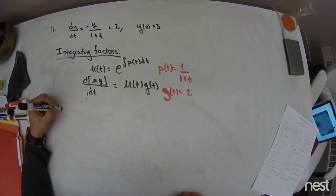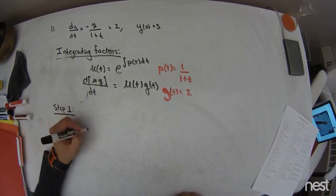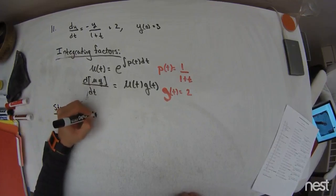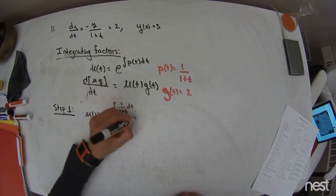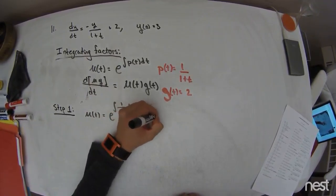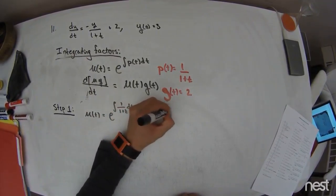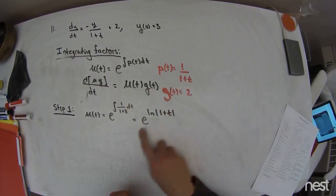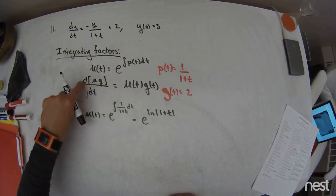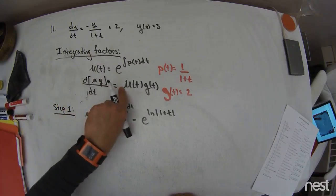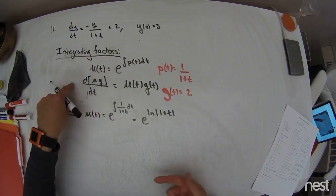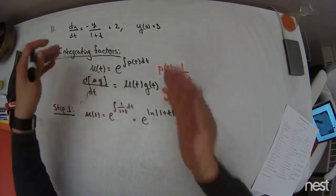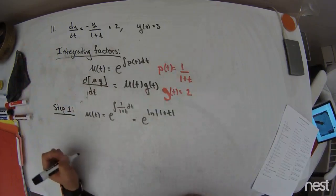So the first thing that I do is step 1. And in step 1, I say that mu of t is equal to e to the integral of 1 over 1 plus t dt. Doing this integral, this is e to the natural log of the absolute value of 1 plus t. It could be a plus c, but that would be a multiplicative constant and factor out because the derivative and this mu wouldn't care, so it would cancel both sides. So we don't need that.